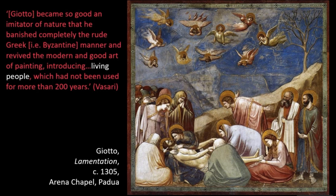This is heaven on earth, but expressed in a more human way. In the words of Vasari, Giotto became so good an imitator of nature that he banished completely the Byzantine manner and revived the modern and good art of painting, introducing living people which had not been used for more than 200 years. In spite of Vasari's inherent bias towards Florentine artists, it's fair to say that Giotto did mark a change in approach, and the fact that he used this naturalistic method so consistently defined the generation of artists to come.